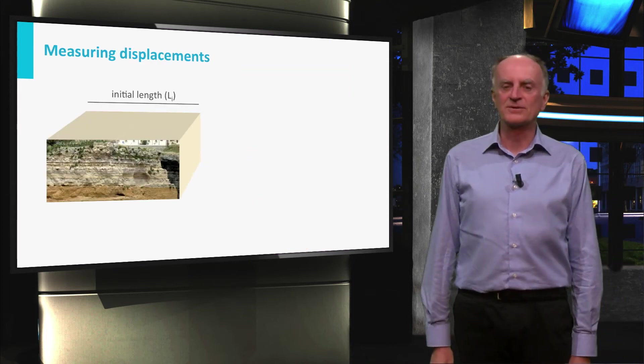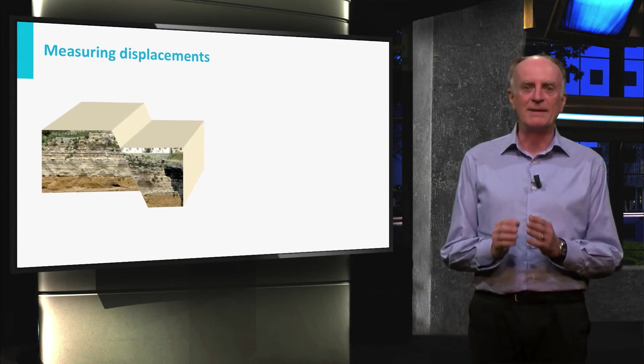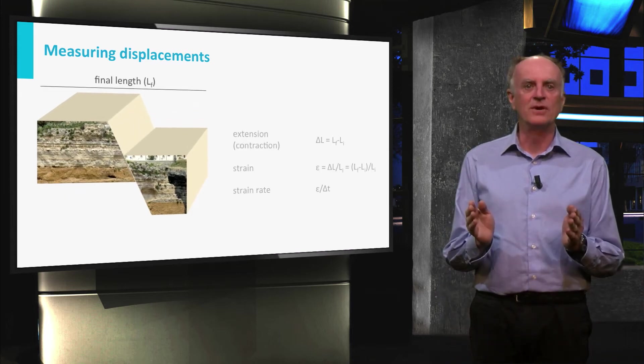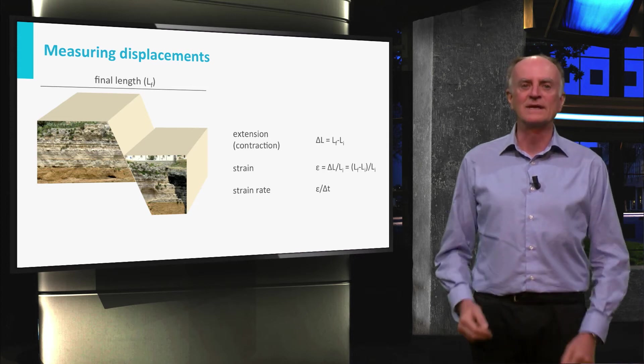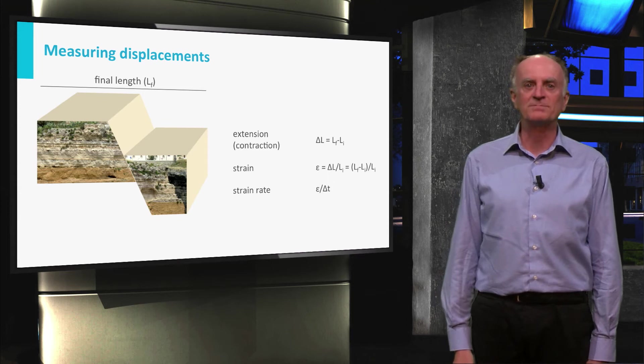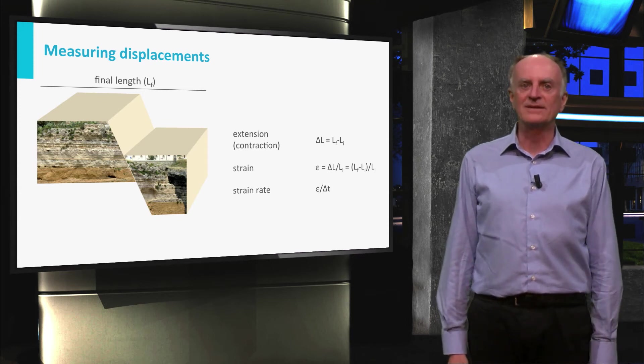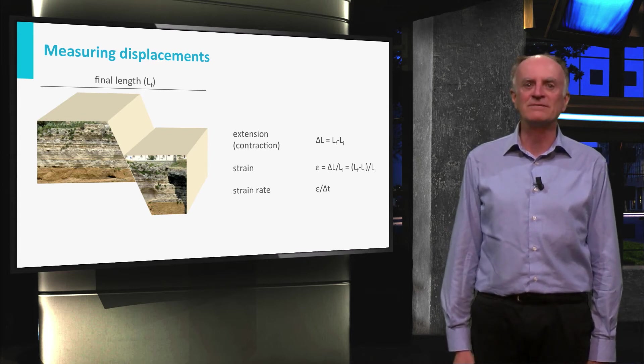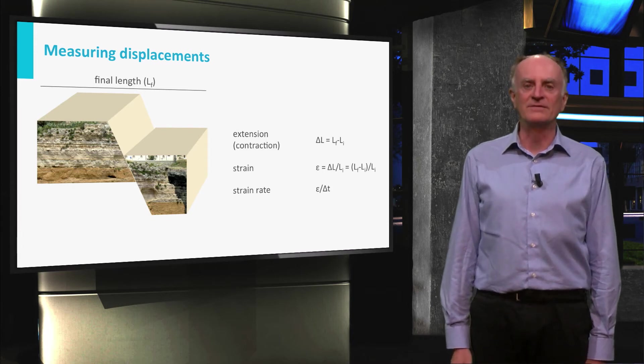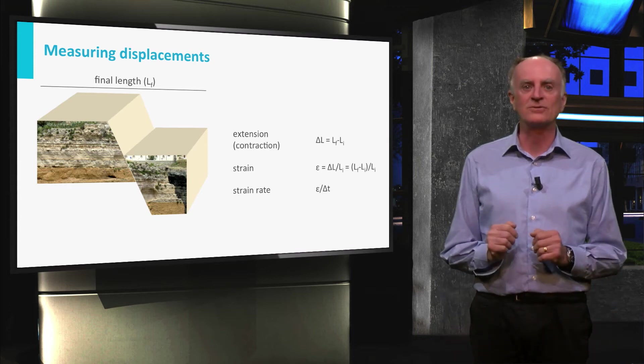Quantifying movements across faults is of great importance. During the deformation, the body will become longer, as in the case shown, or shorter. The difference between the initial and the final length is called extension or contraction, respectively. If you normalize this number by the initial length, you obtain a parameter called strain. If information is available on the duration of faulting, one can obtain the rate of deformation. Many geological phenomena depend on how fast deformation occurs.